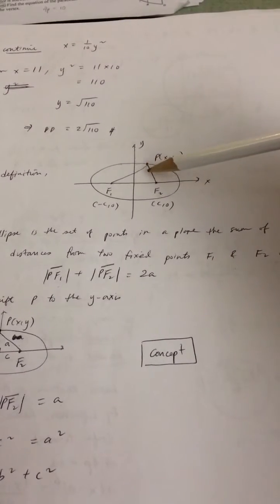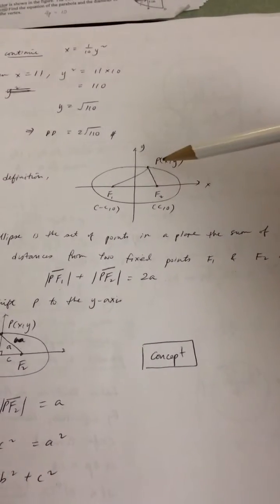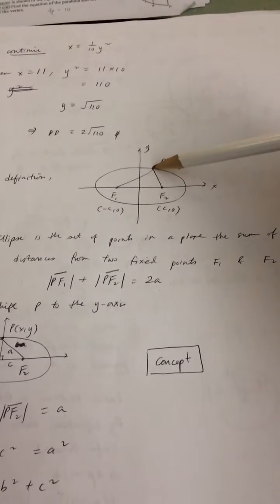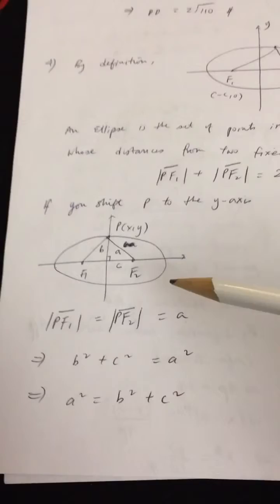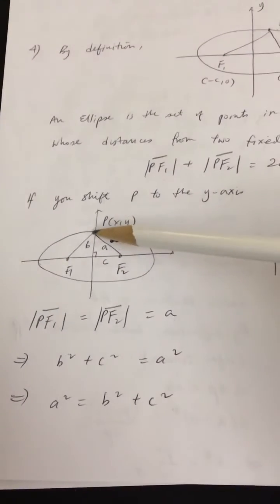So PF₁ + PF₂ = 2A. If you shift the point P to the y-axis, it will look like this. Now your point P is on the y-axis.